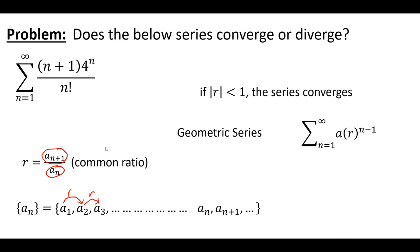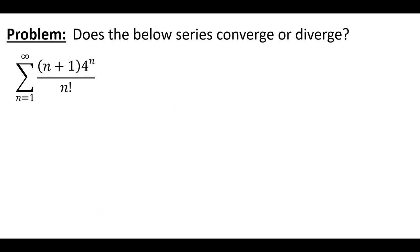But what we can find is the ratio between terms when N gets really, really large. We can find this value — let's call it L. It's not exactly R, but you can think of it as the ratio between terms as N approaches infinity. It turns out that if we find this L value, we can apply a very similar convergence criterion as we had for a geometric series. So back to our series that we're trying to figure out.